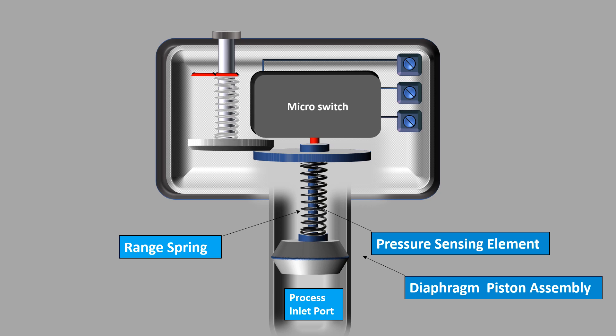Set point adjustment screw: The set point adjustment screw is used to increase or decrease the activation pressure.